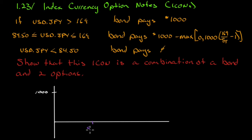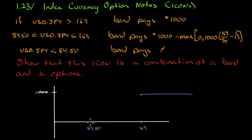Let's do a payoff chart. We put in 84.5 and 169 along the yen axis. If we're at 169 or higher, the bond pays $1,000. If it's less than 84.5, the bond pays zero. In between, the bond pays off linearly, and no matter what value you select for S_T it falls along that line. So there's the payoff from this ICON.